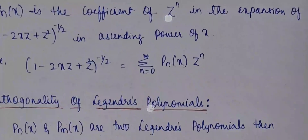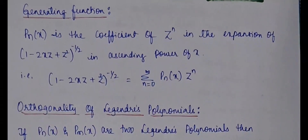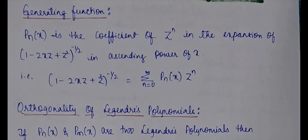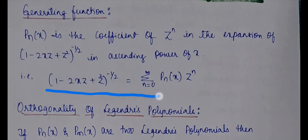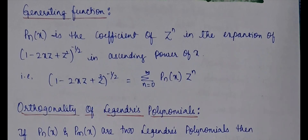Then the next topic is the generating function. The generating function is given by: Pₙ(x) is the coefficient of zⁿ in the expansion of (1 - 2xz + z²)^(-1/2) in ascending powers of z. So the generating function is (1 - 2xz + z²)^(-1/2) = Σ (n=0 to ∞) Pₙ(x) zⁿ. This is the generating function of the Legendre polynomial.